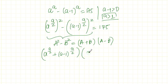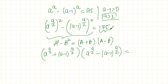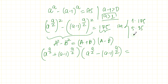...times a to the power of a over 2 minus a minus 1 to the power of a over 2, and this equals 175. Now let's write 175 as a product. There are different ways to write 175: it can be 1 times 175...